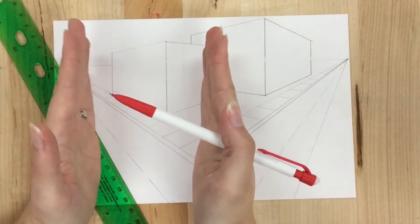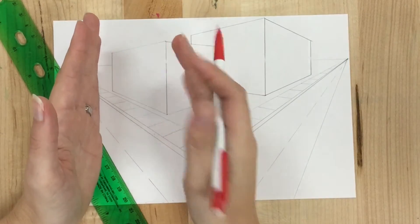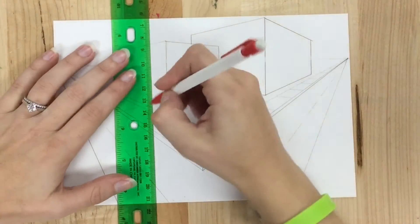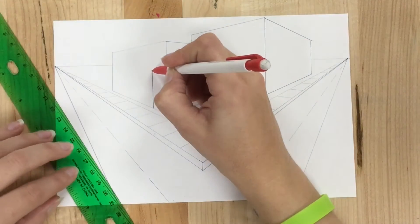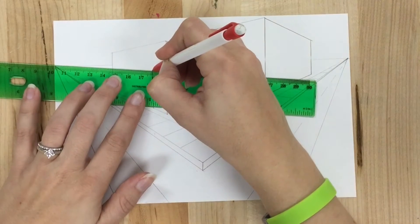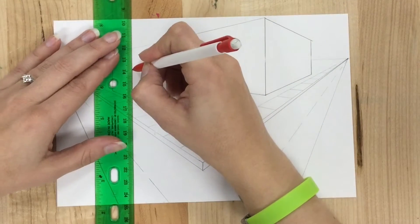So my door has two parallel lines for the left and the right side of the door, but the top needs to go to the vanishing point. So if I decide how tall it's going to be, I can take this line to my vanishing point, and then decide how wide it's going to be.